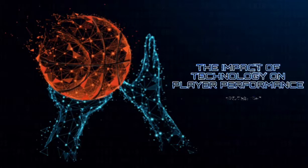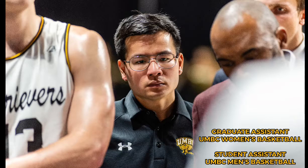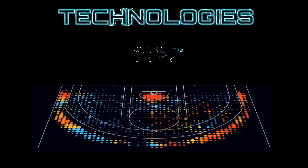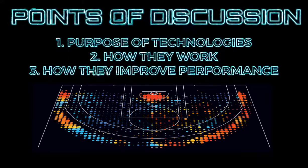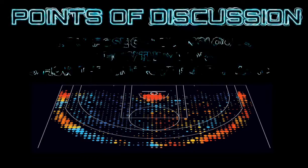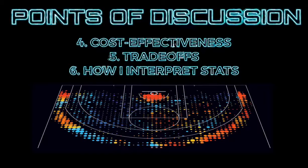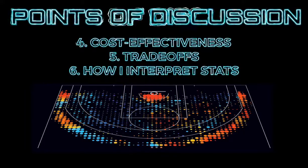Throughout my time working for the UMBC men's and women's basketball teams, I have had the opportunity to work with different cost-efficient technologies, such as SportsCode and Synergy, that are used to analyze and improve player performance. In this video, I will discuss the purpose of these technologies, how they work, the ways in which they are used to improve performance, their cost-effectiveness, the trade-offs to using them over more advanced technologies, and how I interpret the information I receive from them to develop drills and implement plays.